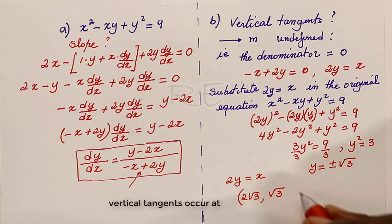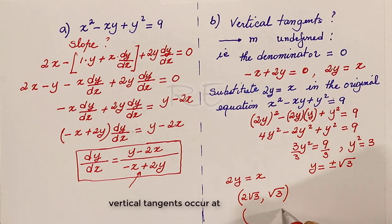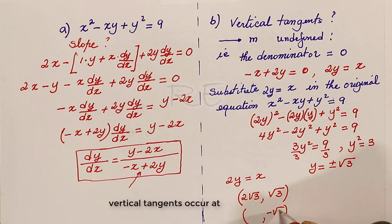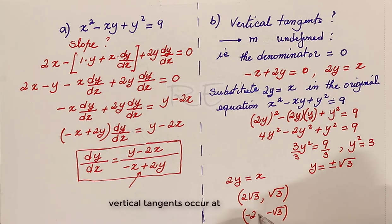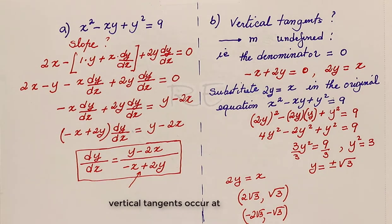When y is equal to square root of 3, x is 2 times square root of 3, which is 2 square root of 3. When y is equal to negative square root of 3, x is 2 times negative square root of 3, which is negative 2 square root of 3.